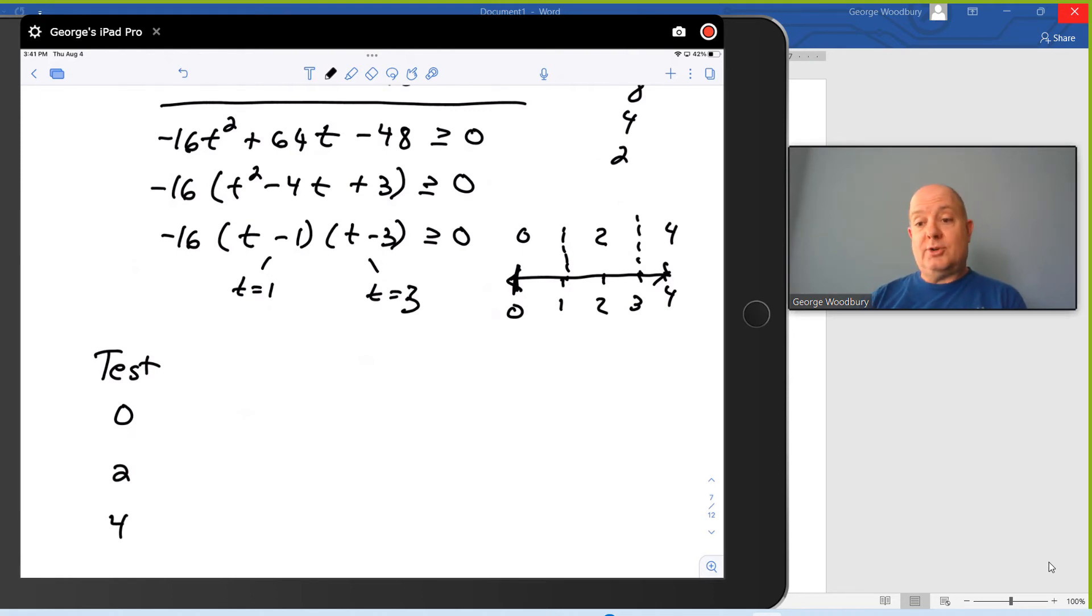My three factors are negative 16, t minus 1, and t minus 3. And I'm looking for this expression, this product to be greater than or equal to zero. And that means that I'm looking for positive solutions. What kind of numbers are greater than zero? Positive numbers are. Negative 16 as a factor is always going to be negative. So in that first column, no matter what t is, that first factor is always negative. So I've written that down.